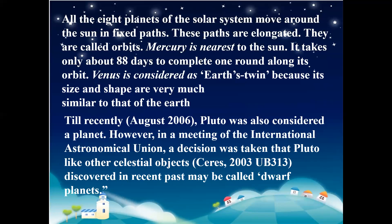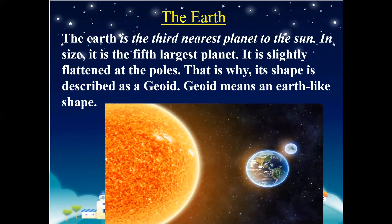Venus is considered Earth's twin because its size and shape are very similar to that of the Earth. Until recently — August 2006 — Pluto was also considered a planet. However, in a meeting of the International Astronomical Union, a decision was taken that Pluto, like other celestial objects discovered in the recent past, may be called a dwarf planet. This means Pluto is no longer considered a planet. Let us now study about the most exciting planet, which is the Earth.